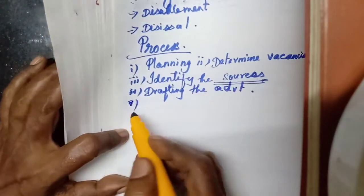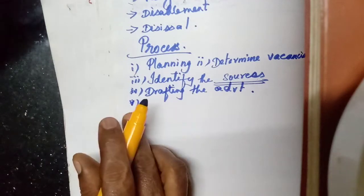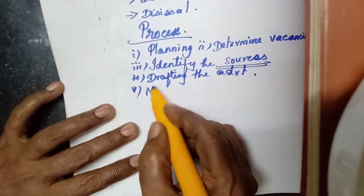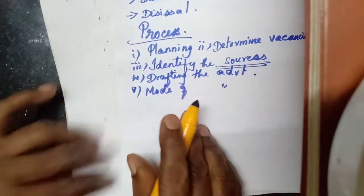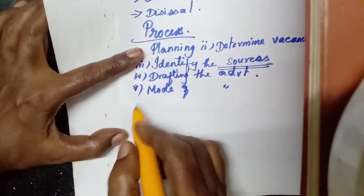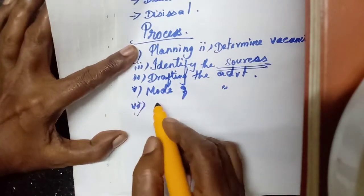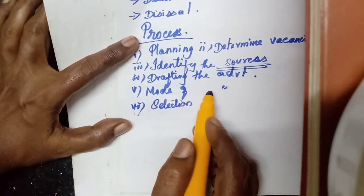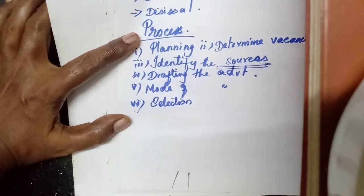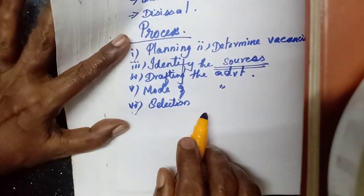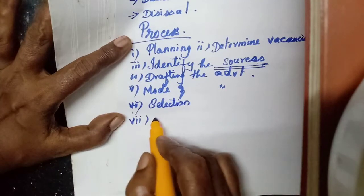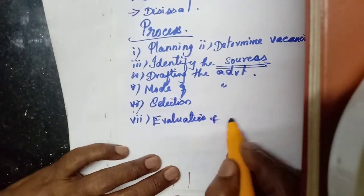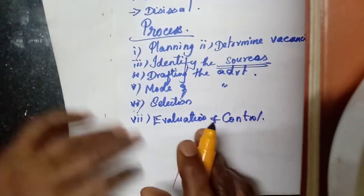After drafting the advertisement, they have to select the mode of advertisement — whether it is on TV or in the newspaper. Then after the mode of advertisement, candidates will send their CVs and applications, either in person or online. Then they have to do the selection. Finally, they have to do evaluation and control. This is the process of recruiting.